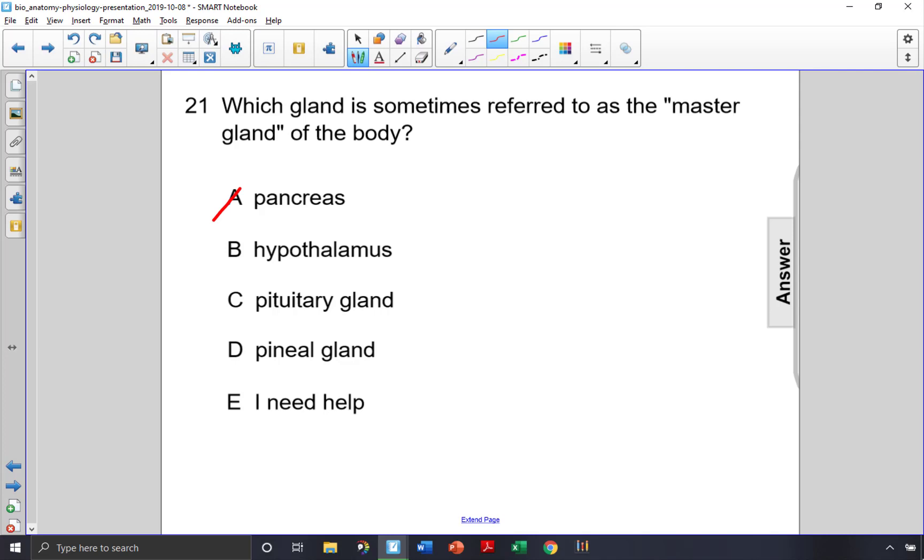Hypothalamus also looks like a good answer because it is a part of the brain that has a close association with the endocrine system, but it doesn't secrete all the hormones that control the other endocrine organs, so it's not the master gland.